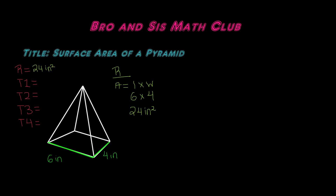Next, we have to find the area of the triangles. We have two triangles on the sides, and two triangles on the front and the back. The triangles on the sides have the same dimensions, and the triangles on the front and back have the same dimensions. Let me show you — I'll highlight the side triangles with a pink line to show which triangles I'm talking about.